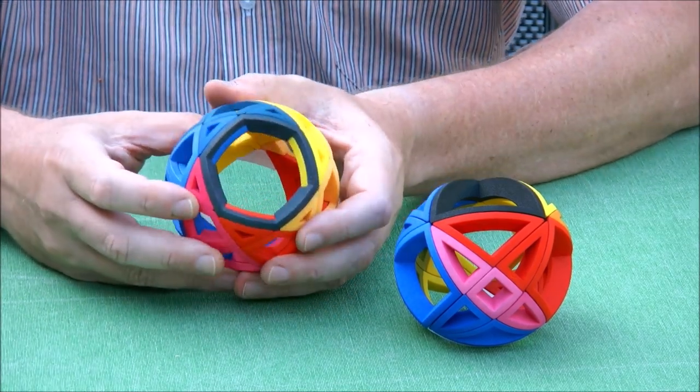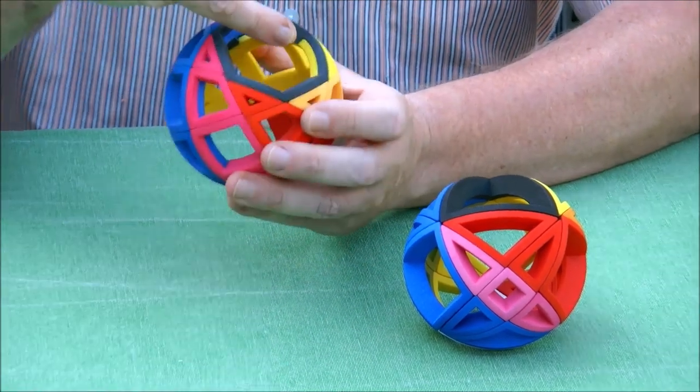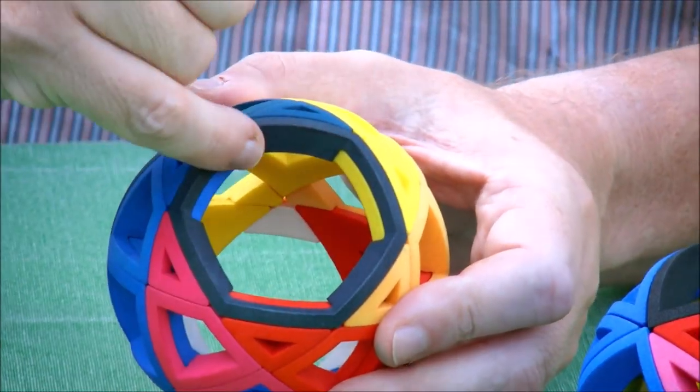And the asymmetry can be seen a little bit because of the red, blue and yellow that you see shining through here.